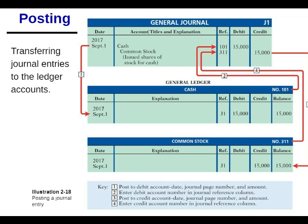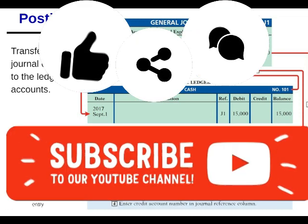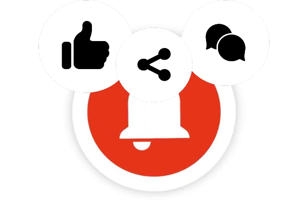Hopefully that makes sense as far as posting to the ledger. Eventually we'll have a comprehensive problem that ties all this together, but for now review these videos. Next time we'll move on to step four, then steps five through nine. Repetition is key in accounting, so keep that in mind. See you in the next video — subscribe, like, and share.